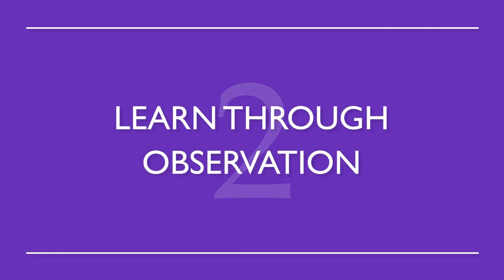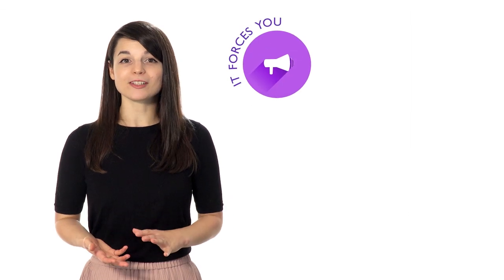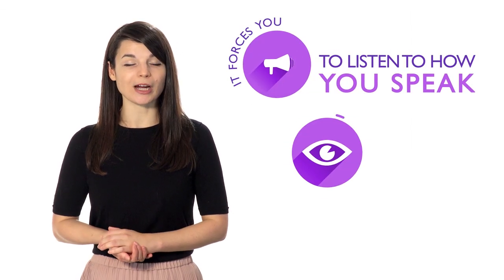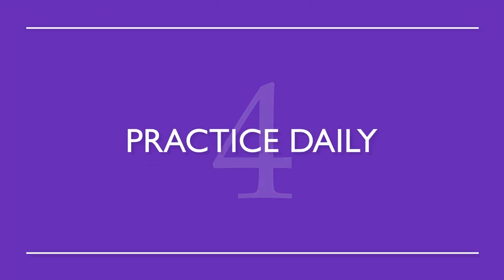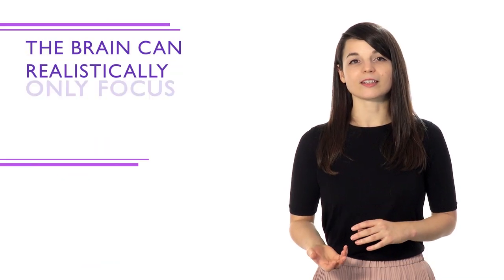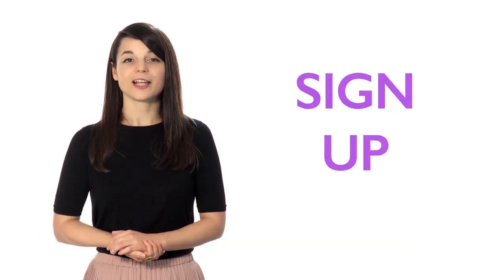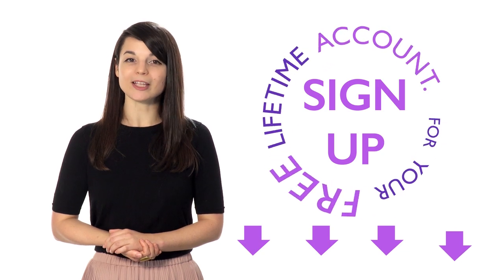Number two: learn through observation. This is how we all learned our native languages as kids — words will develop their own meanings that relate better to your target language rather than meanings that are translated directly. Number three: speak out loud to yourself. Even if you're a little embarrassed, it forces you to listen to how you speak and makes it much easier to spot simple grammar mistakes. Number four: practice daily. If you practice everything for only one day, you won't retain the information. The brain can realistically only focus for about 30 minutes, so studying a little every day allows you to absorb better. Follow these steps and have patience — you'll soon achieve your language learning goals. Sign up for your free lifetime account — no credit card required.